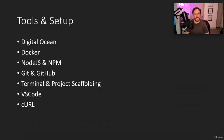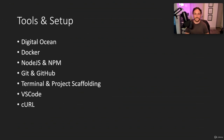Some tools and setup we'll cover today: creating a DigitalOcean account, downloading and installing Docker and Node, installing Git, creating a GitHub account if you don't have one, terminal and project scaffolding, installing Visual Studio Code, and using the command line utility curl. With that, let's get started.